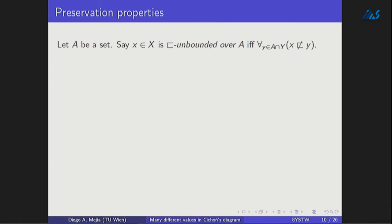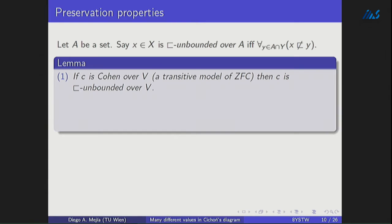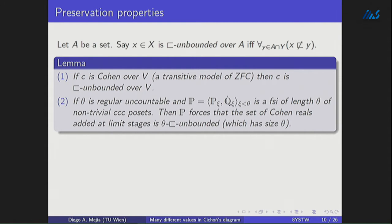Given some definitions: if we have a model A of ZFC, we say that a real from the domain X is unbounded over A if and only if no real belonging to that model can bound this object. A typical example is a Cohen real: if we have a Cohen real over a model B, the Cohen real will be unbounded over B, no matter what the relation is. This is because of the requirement that the set of reals dominated by a single real is meager. That is why Cohen reals are always unbounded, and this will be a key part of this work.